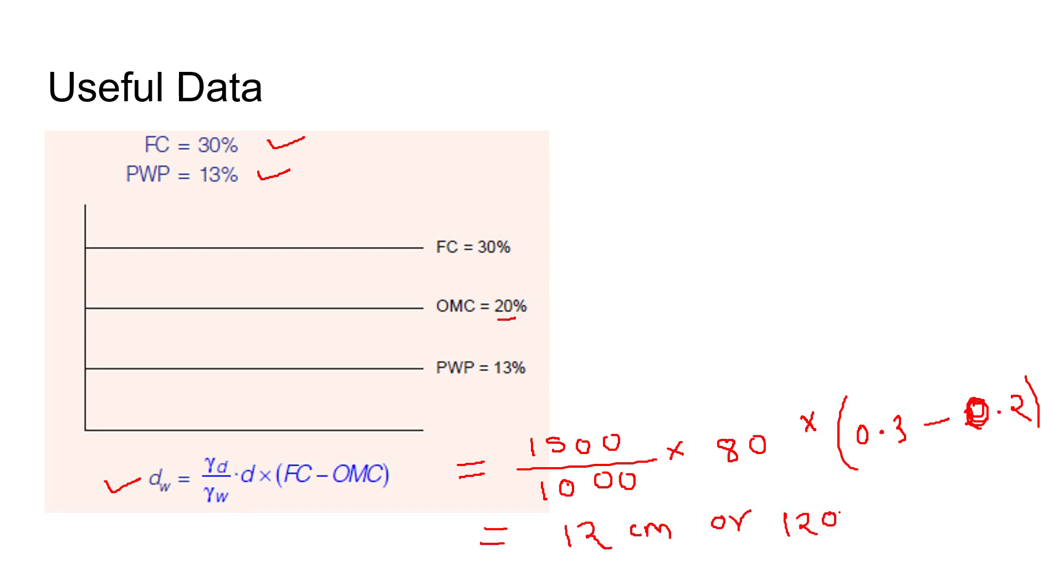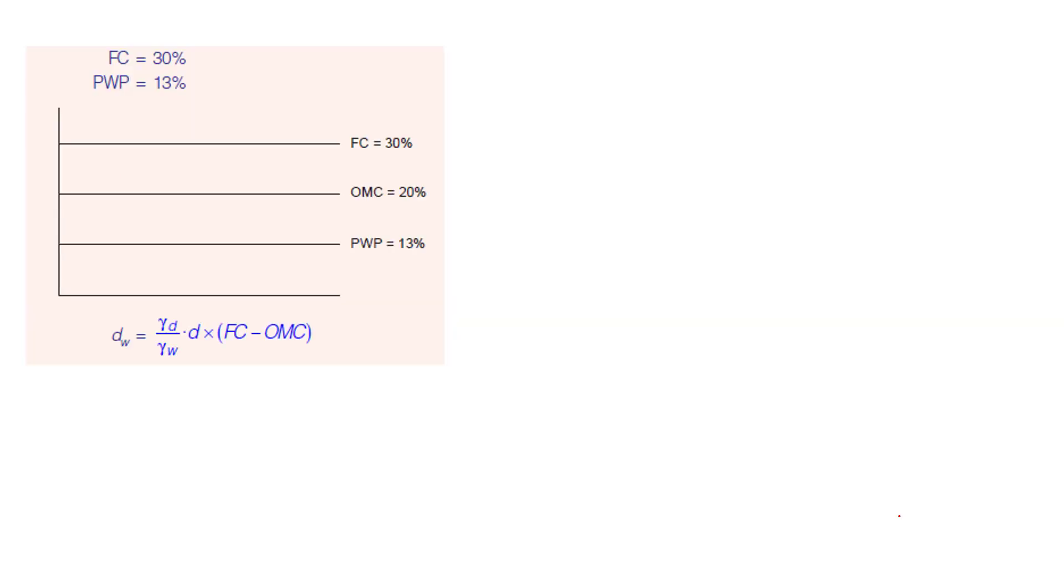Now we have to find out the days. In order to find number of days, we have depth. Consumptive use is given as 2 mm per day, which is the water depth required daily.